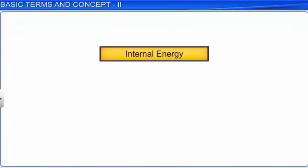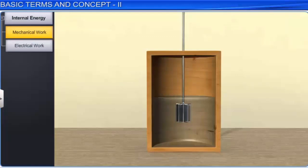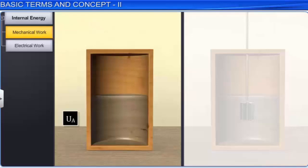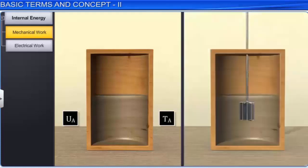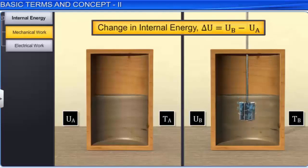We can bring a change in internal energy in a system by two ways. In the first method, internal energy can be increased by doing some mechanical work — for example, by churning the water. Let UA be the initial internal energy of the system at temperature TA. After churning, internal energy changes to UB as temperature increases to TB. Thus, the change in internal energy is given by delta U = UB minus UA.